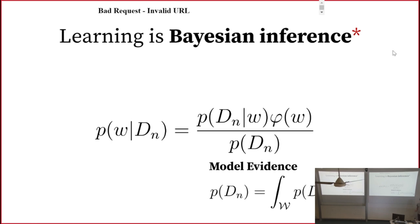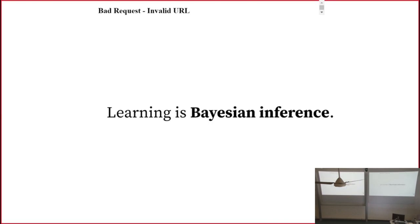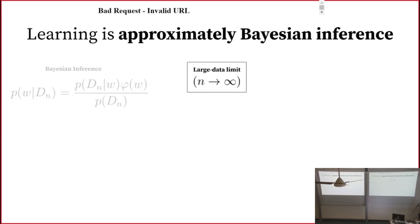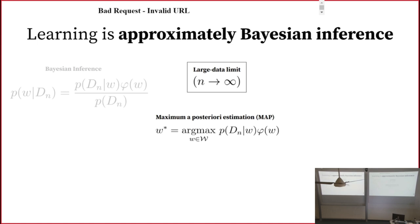There's a problem with this definition: that integral is completely intractable. It explodes exponentially and we can't compute it. Unfortunately, we cannot be perfect Bayesian reasoners. Instead, let's propose learning as approximately Bayesian reasoning. One thing you can do is assume you have lots and lots of data. As you take more and more data, the posterior clumps closer and closer around the optimal parameter values — it's asymptotically normal. So instead of estimating densities, you estimate points. We only want to learn the maximum, the best parameter value in this space.